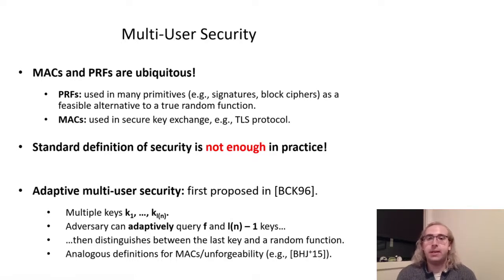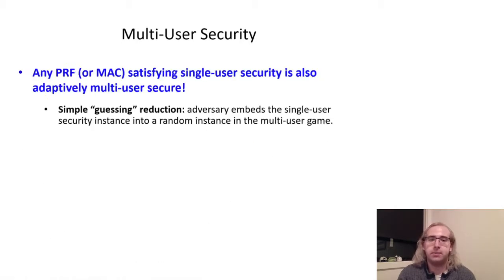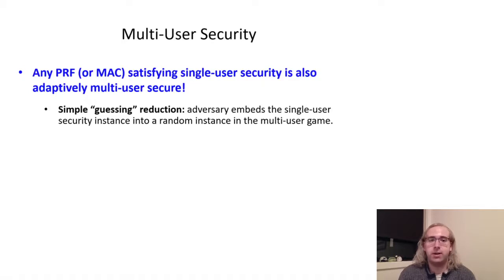We can easily think of an analogous definition for MACs, where the adversary, after making tagging and key opening queries to many different instances, must forge a tag for an unqueried message on an instance whose key has not yet been revealed. The good news about this stronger definition is that it is quite easy to achieve. In fact, any PRF or MAC which satisfies the classical definitions of security already satisfies the respective definitions of adaptive multi-user security.